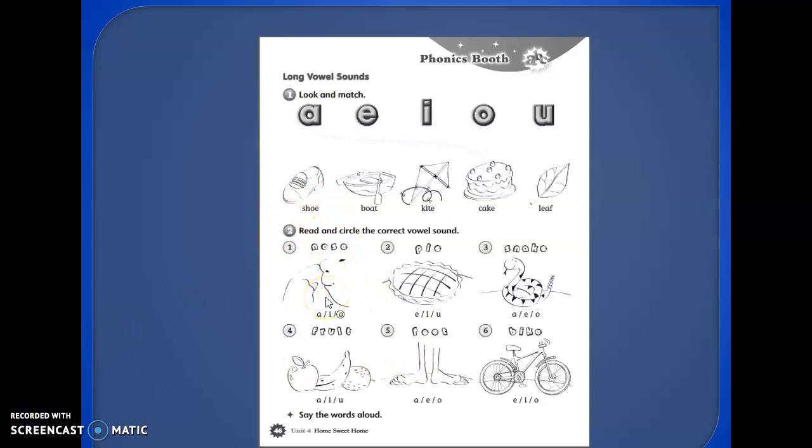So we continue: pie, okay, the vowel sound, I. Snake, okay snake, letter A. Okay, number four, fruit, left letter U, right. Number six, feet, feet, feet, letter E, right. Number six, bike, letter I, excellent.